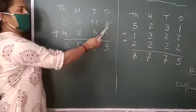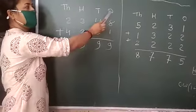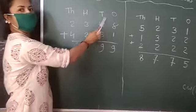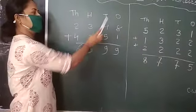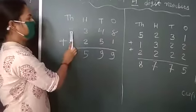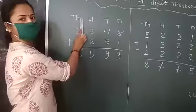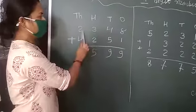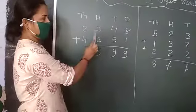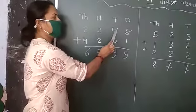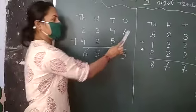Eight ones. Four tens. Three hundred. Two thousand. Two thousand, three hundred, forty-eight.